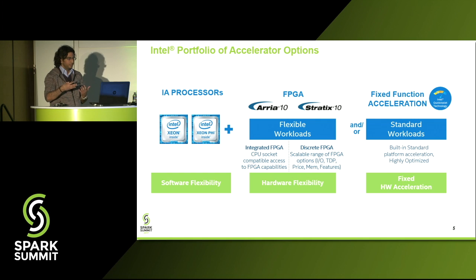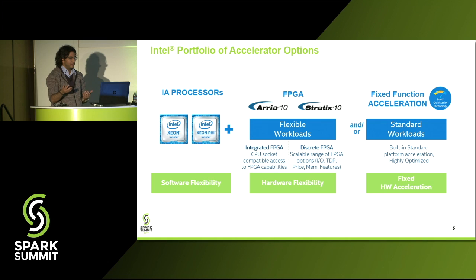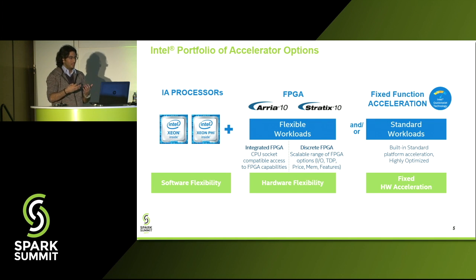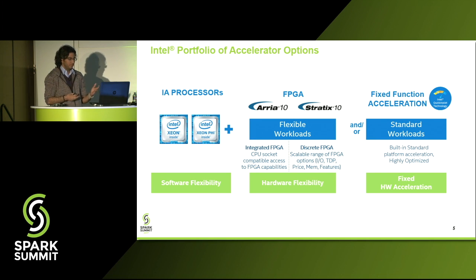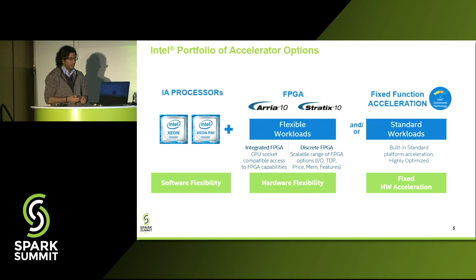If you want to use the same binary, you can also put it on some Xeon Phi accelerators — these are binary compatible. This is what we mean by software flexibility. On top of that, you also have an ability to add your FPGA card. There are two ways in which FPGA can be part of the system: the integrated FPGA and the discrete FPGA.